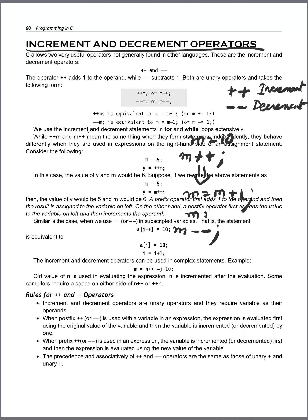Similarly, the decrement operator reduces the value of the variable by one. If the value of m is 10 and you write m--, this is equivalent to m = m - 1, so the value of m will become 9. So ++ increases the value by one and -- decreases the value by one. These are the increment and decrement operators.